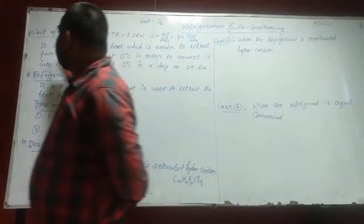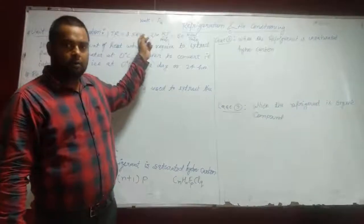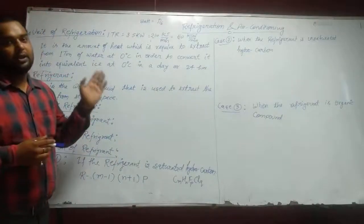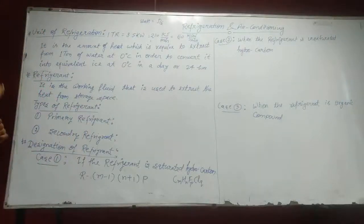The unit of refrigeration is 1 ton of refrigeration equals 3.5 kW and equals 210 kJ per minute and equals 50 kcal per minute.